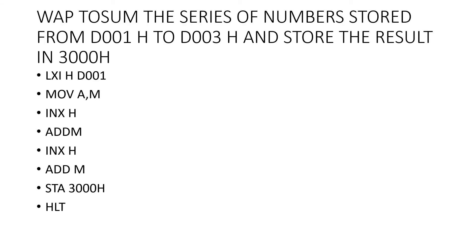The next program: write a program to sum the series of numbers stored from D001 to D003 and store the result in 3000H. There are three data bytes — one in D001, one in D002, and one in D003. All must be added and the result stored at memory location 3000. So: LXI H D001, take the data to accumulator, increment, add memory, increment again, add memory, and store the data in 3000 and halt.